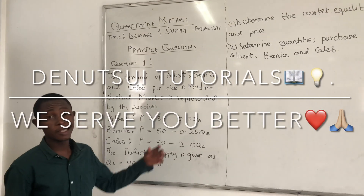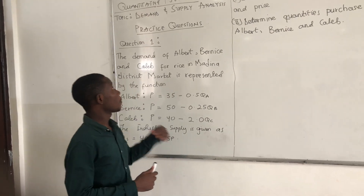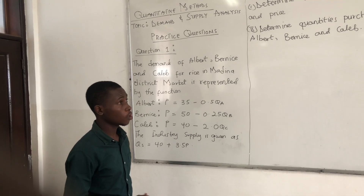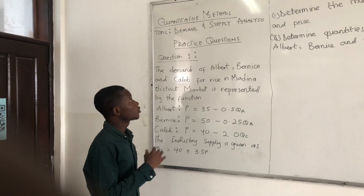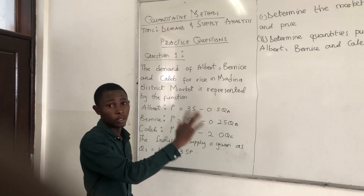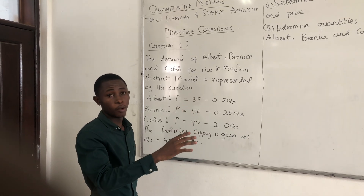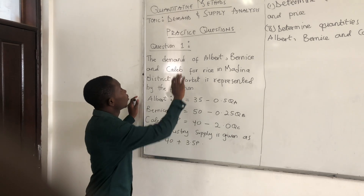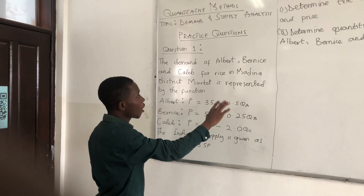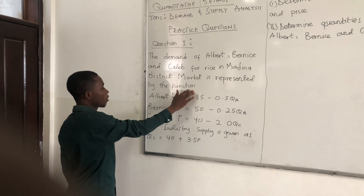We are back to our quantitative method, which is basically a level 200 second semester course. We have already created demand and supply analysis in my previous videos, so I'm solving questions based on that. When we have done that, we move towards revenue, cost and profit. For the demand and supply analysis, that's the first question I'm going to solve. The demand of Albert, Benis and Caleb for a rise in the money in the industry market is represented by the function.